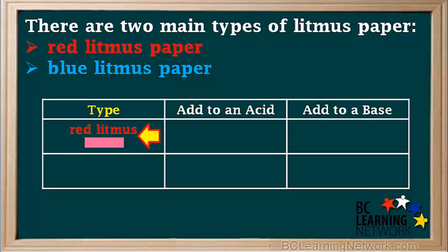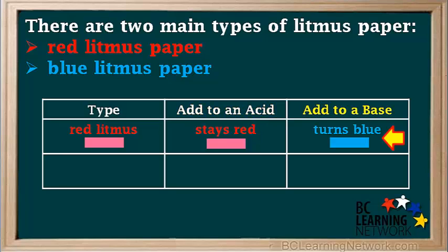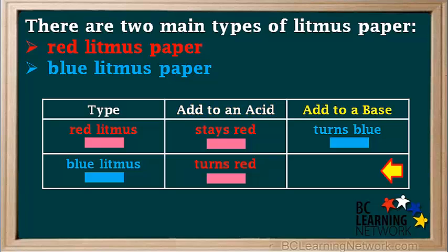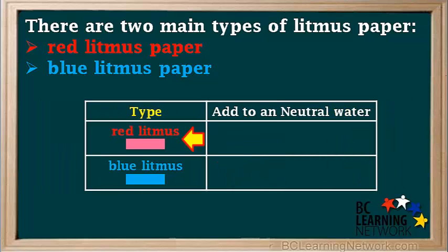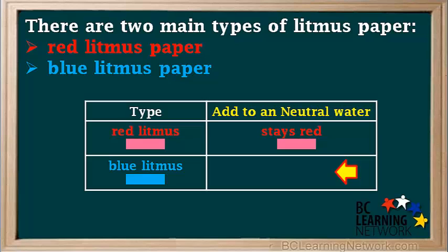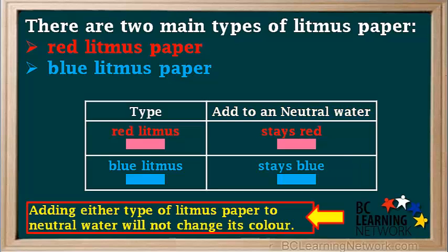Here is how the two types of litmus paper work. If you take a piece of red litmus paper and add it to an acid, it will stay red. But if you add it to a base, it will turn blue. Now if you take a piece of blue litmus paper and add it to an acid, it will turn red. But if you add it to a base, it will stay blue. If you take a piece of red litmus paper and add it to neutral water, it will simply remain red. And if you take a piece of blue litmus paper and add it to neutral water, it will stay blue.